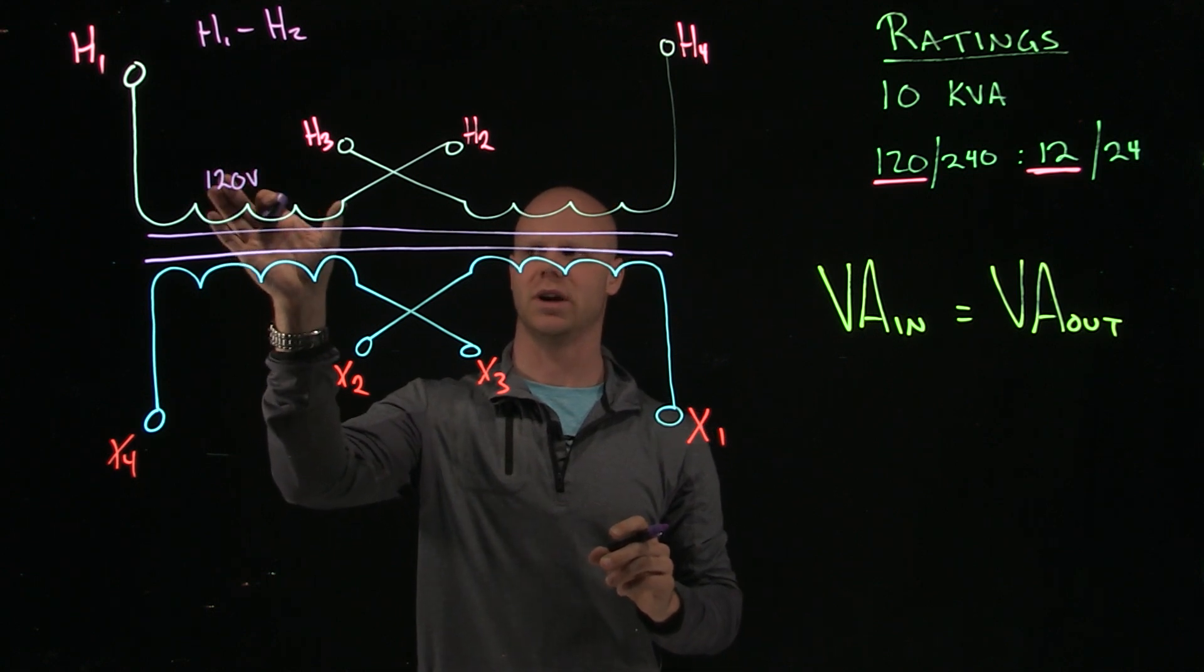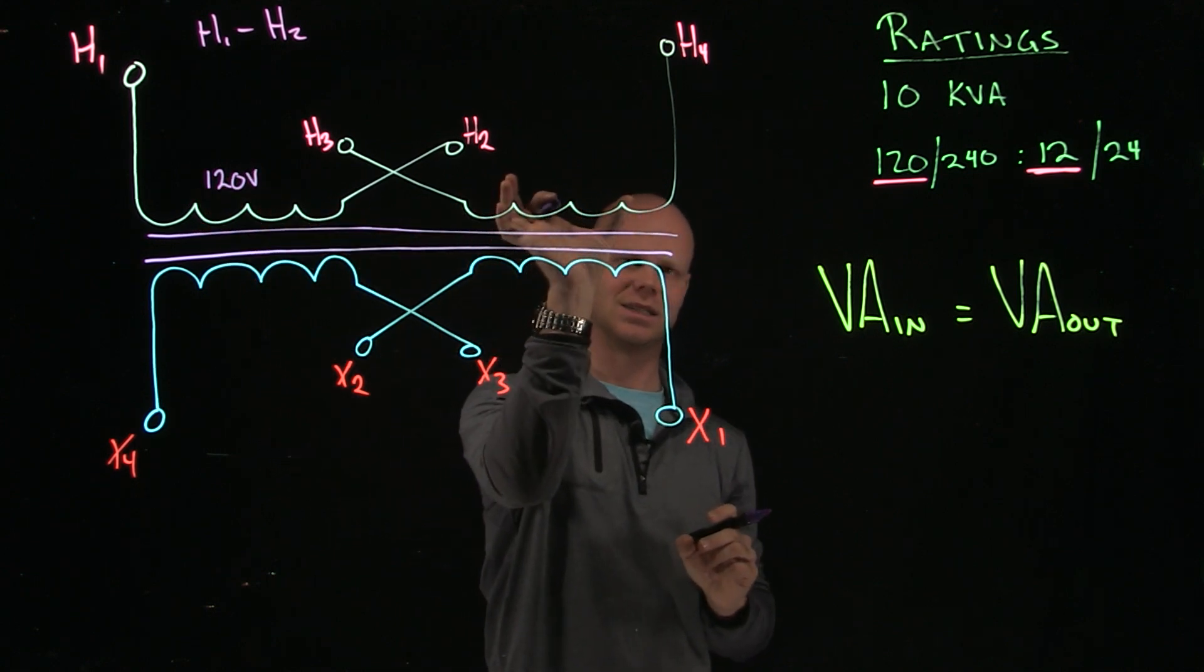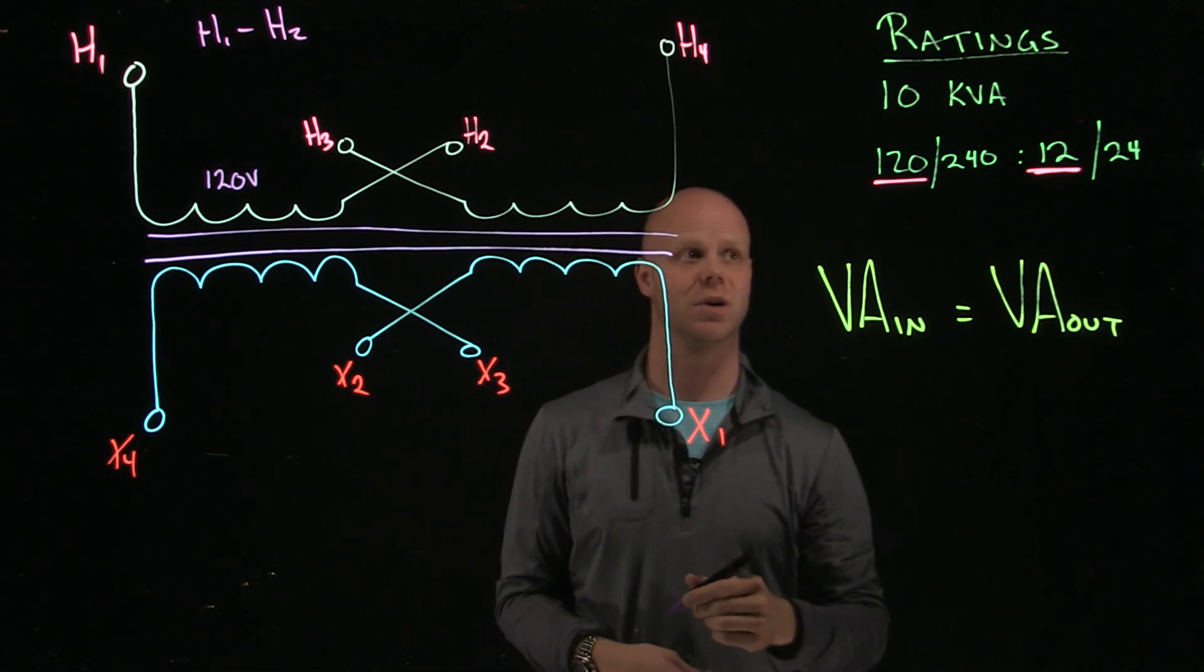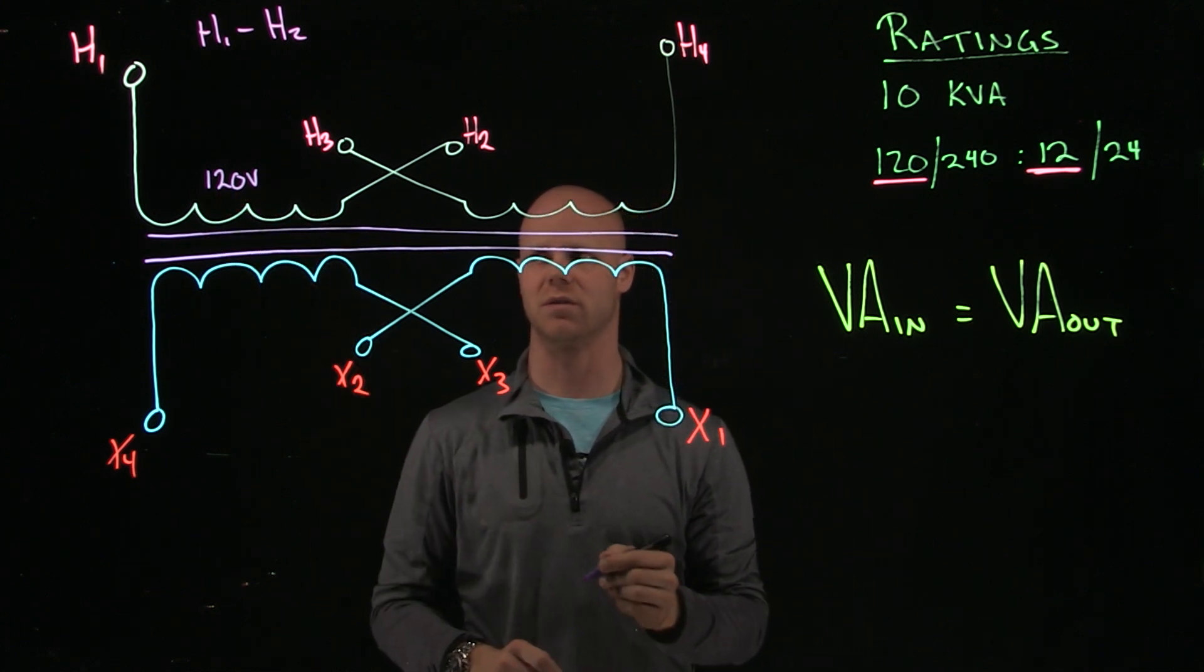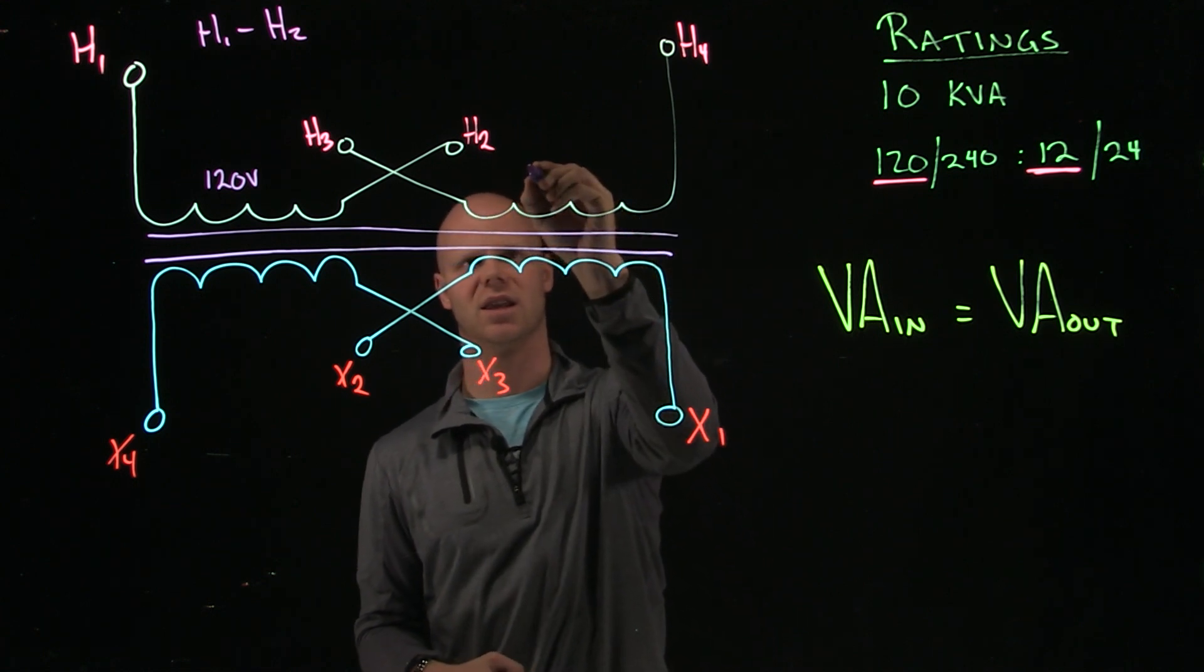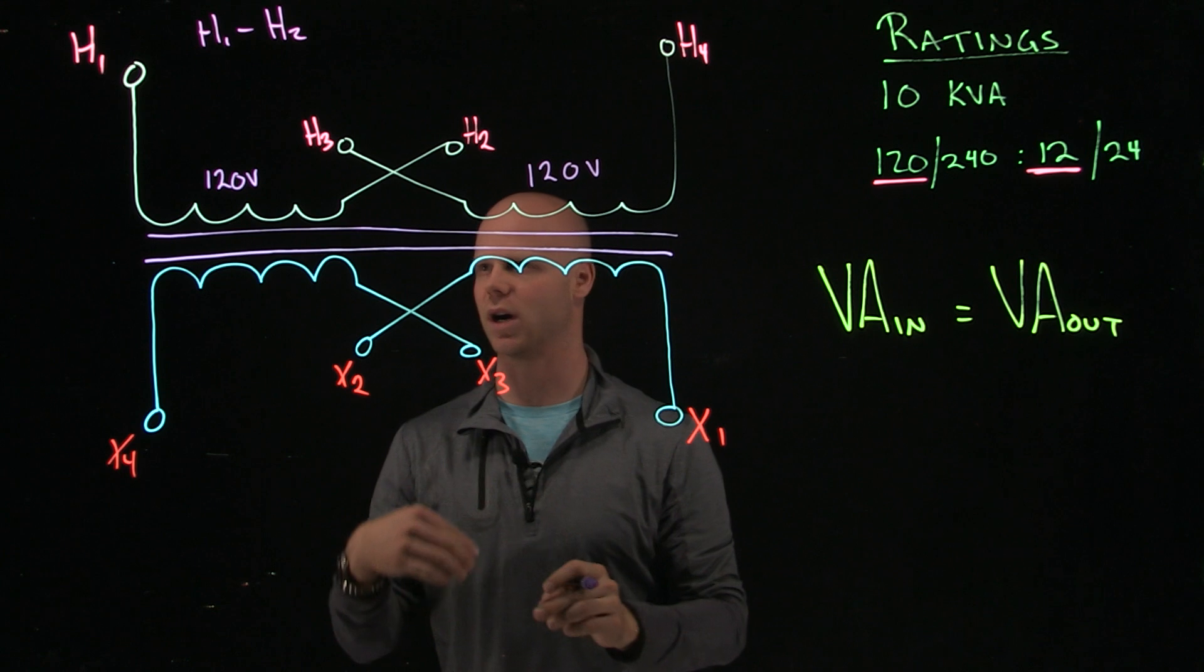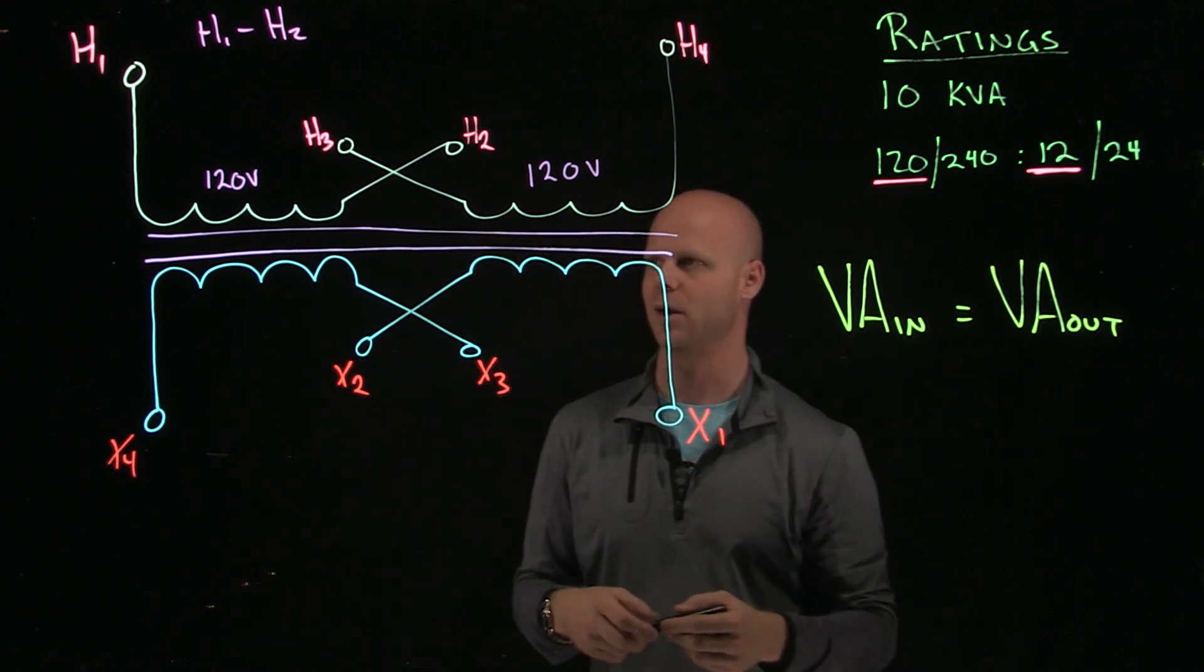The H1 to H2 winding, this winding, has to be exactly the same as this winding to make this transformer operate the way that it should. So if this is a 120 volt rating, this winding will have a 120 volt rating. And now I have the option to wire it in series or parallel, and we'll get into that next.